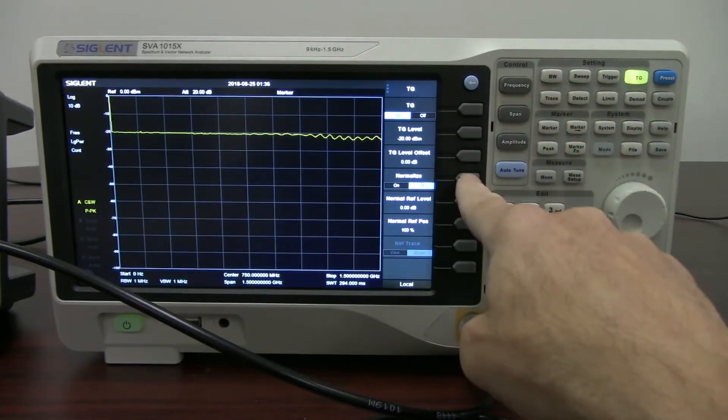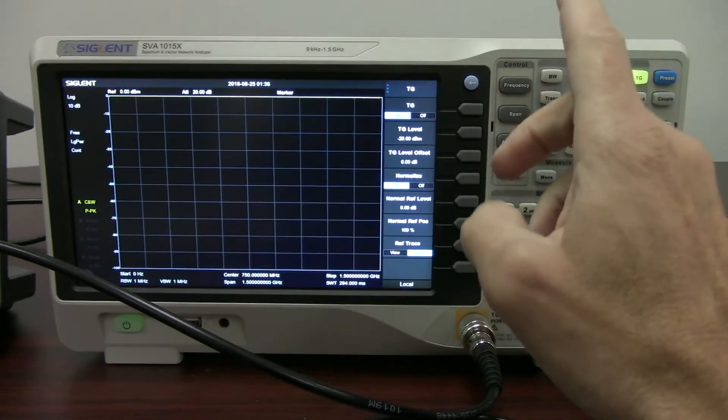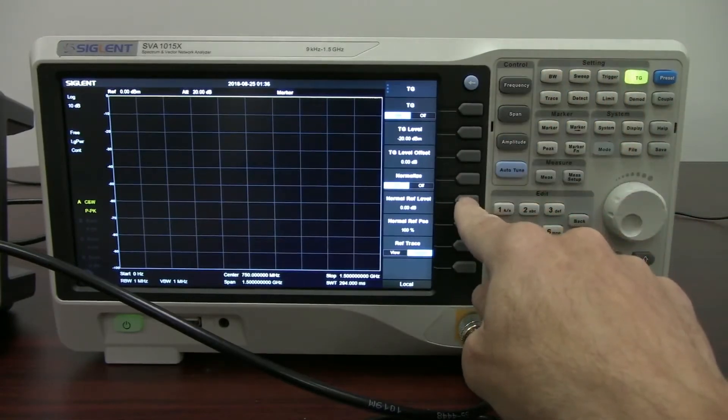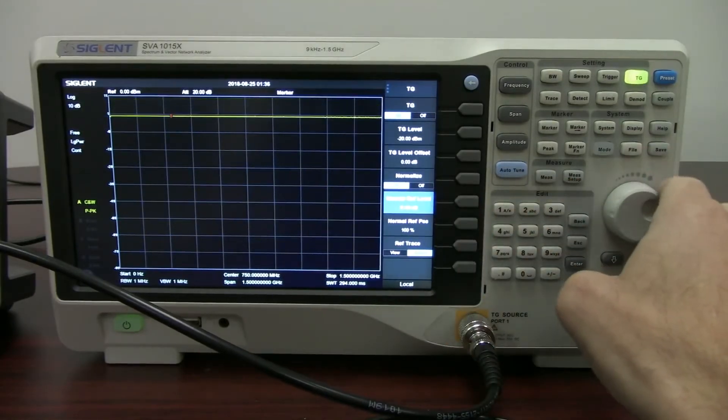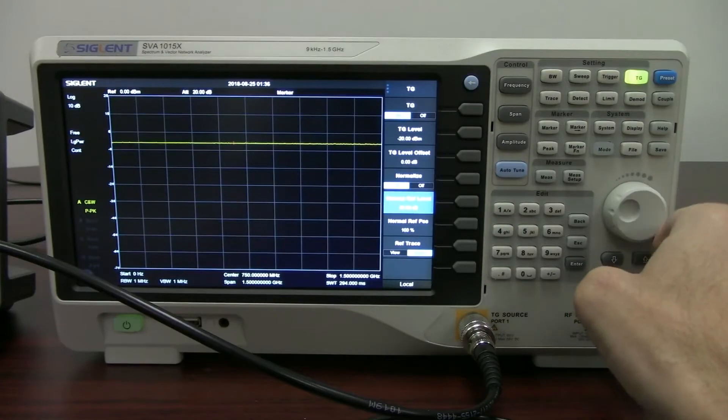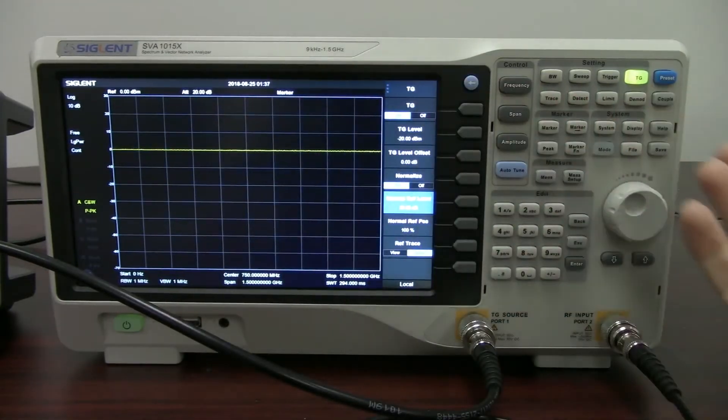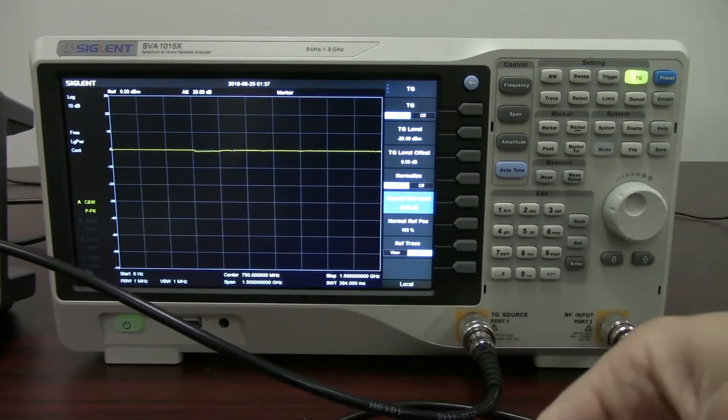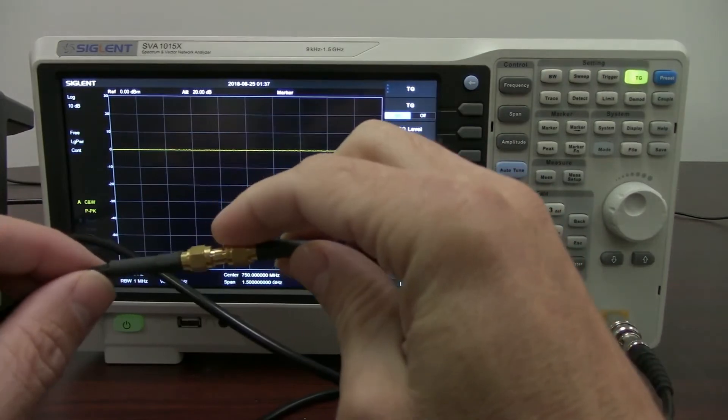So you're going to see when we do the normalization, the line is going to go straight, and it's going to be at zero dBm. Now what we can do is move the normalization reference level. So we're just going to go here and drop it down, and now you'll see that it's a nice flat line. Again, it's at zero dBm, which makes sense because we've normalized all of the losses of the cabling, so we effectively have a relative zero measurement.